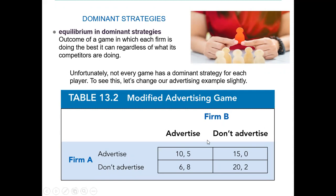In the advertising game: if both advertise, Firm A wins. If Firm A does not perform well, Firm B gets better because they advertised. If both do not advertise, Firm A still has a dominant strategy. If Firm A advertises and the other does not, we find the big dominant strategy player. In the modified advertising game, by keeping learning from the previous strategy we can identify what maximizes our profit.